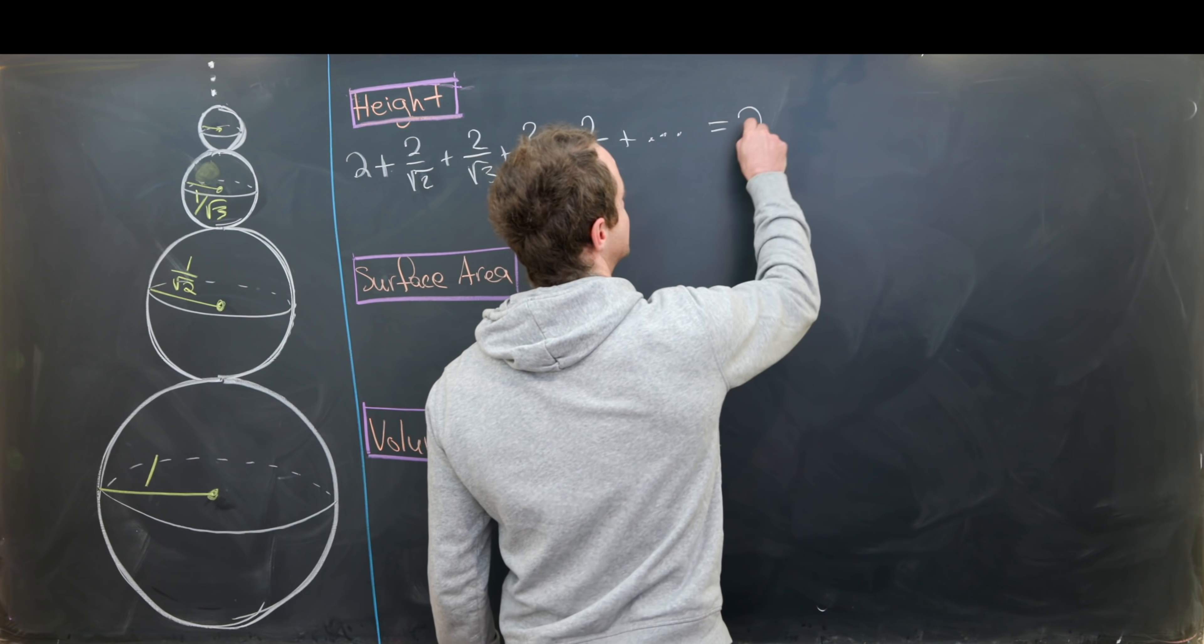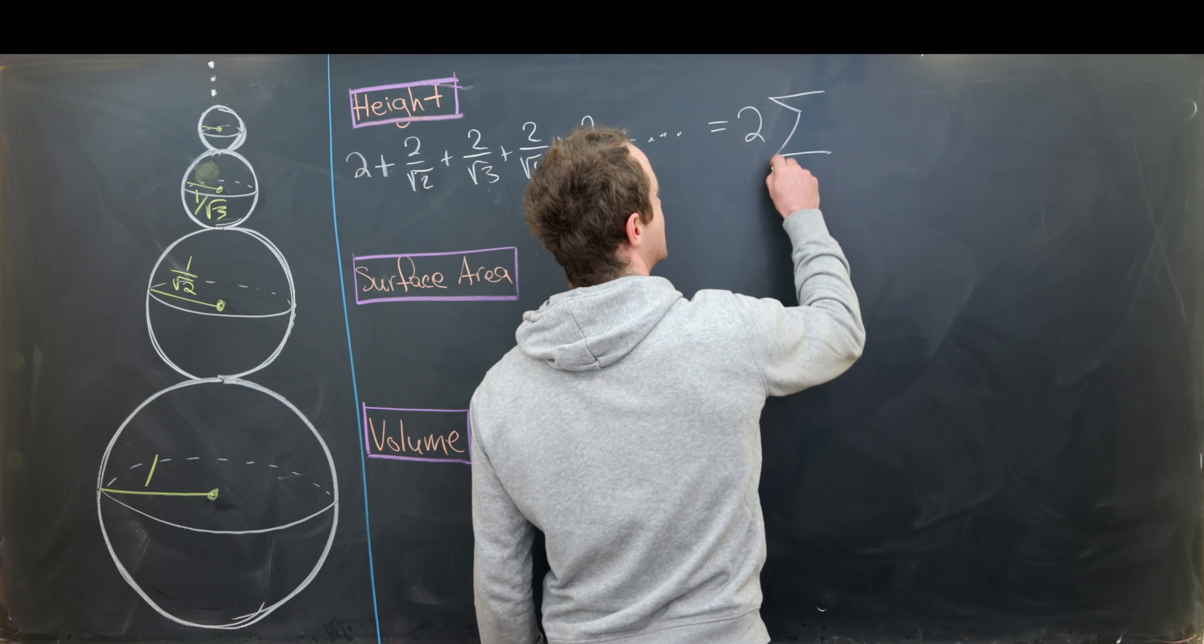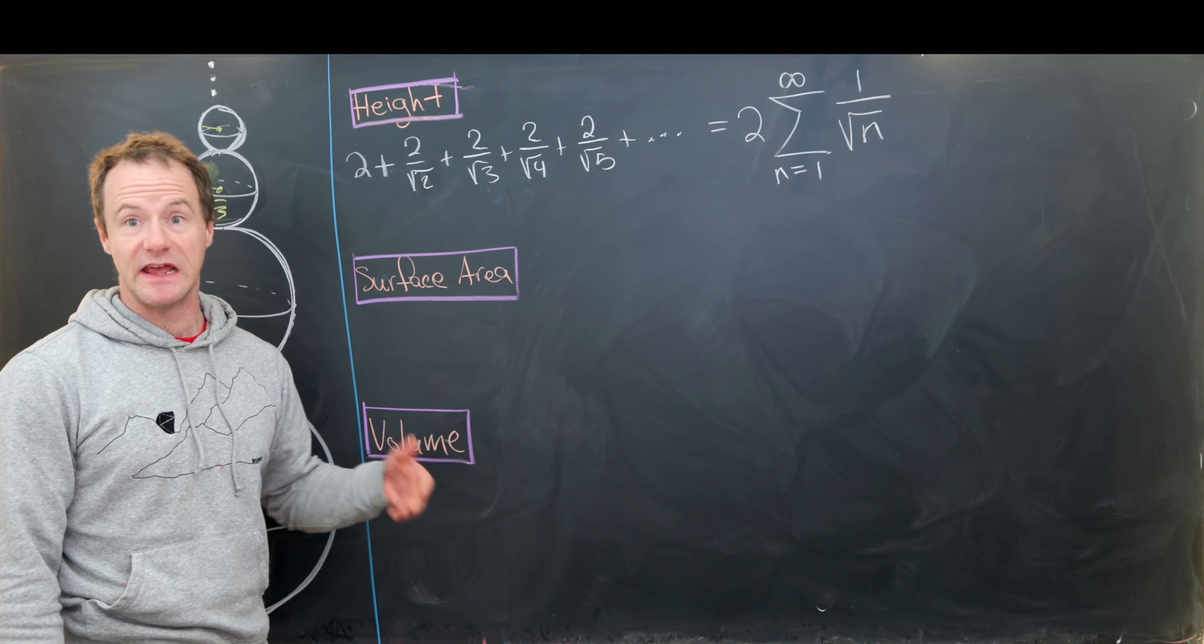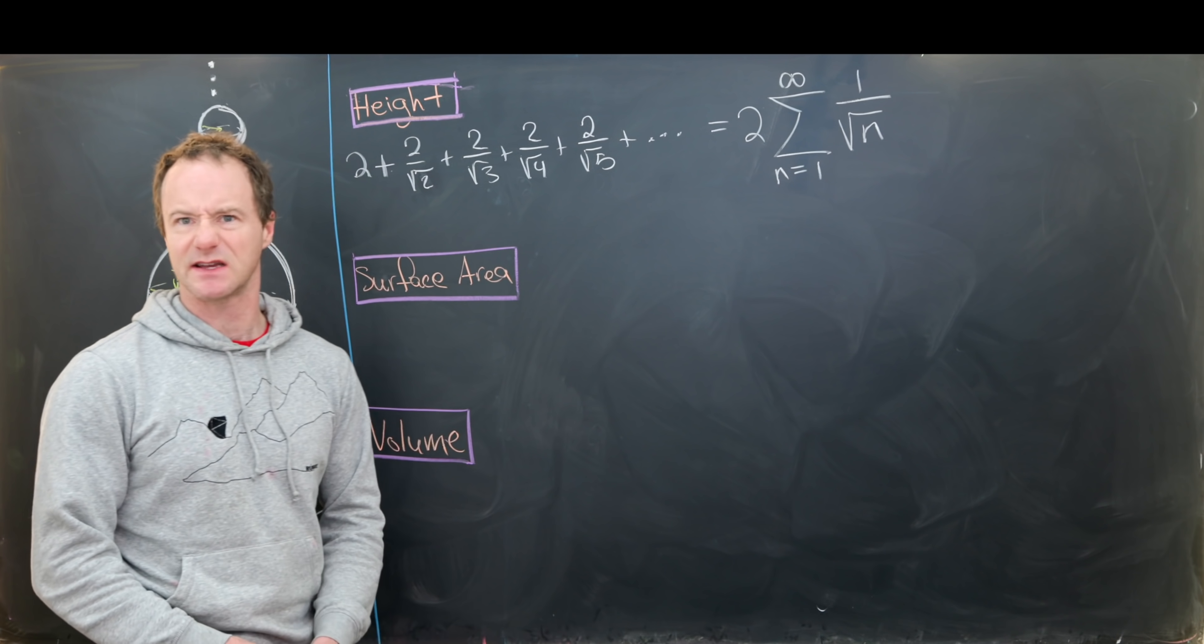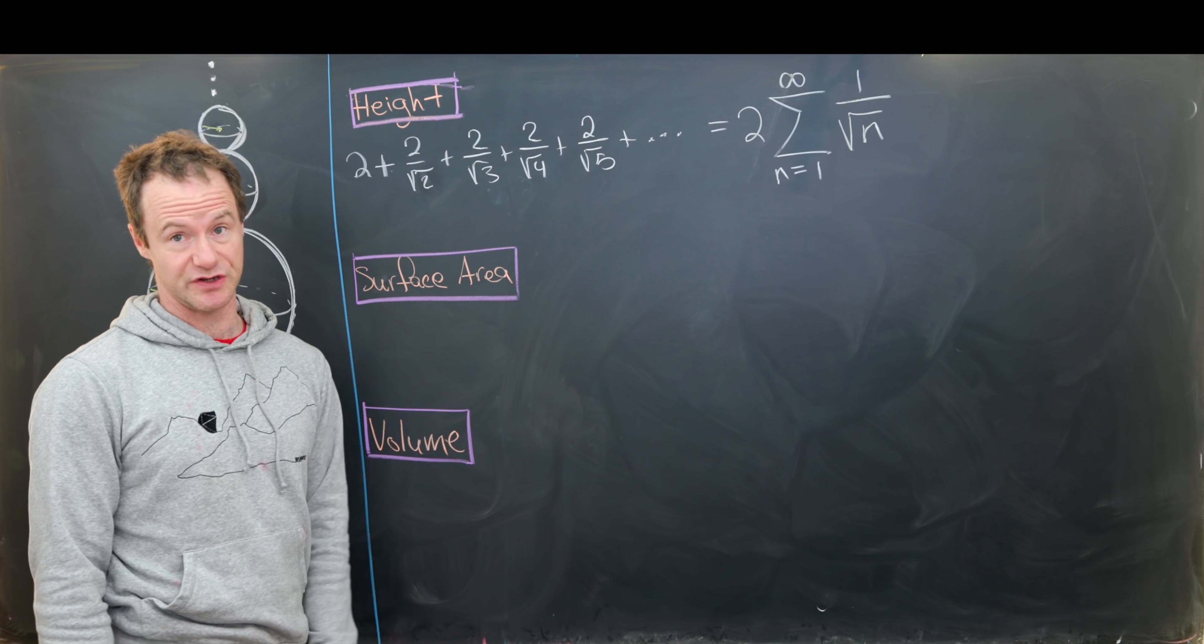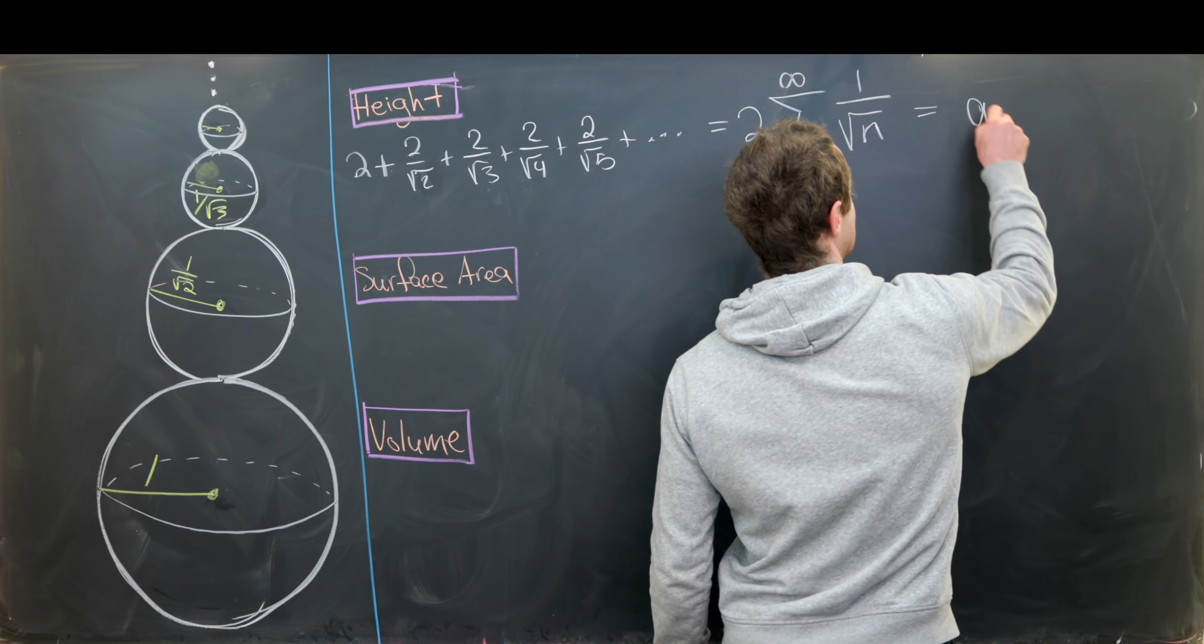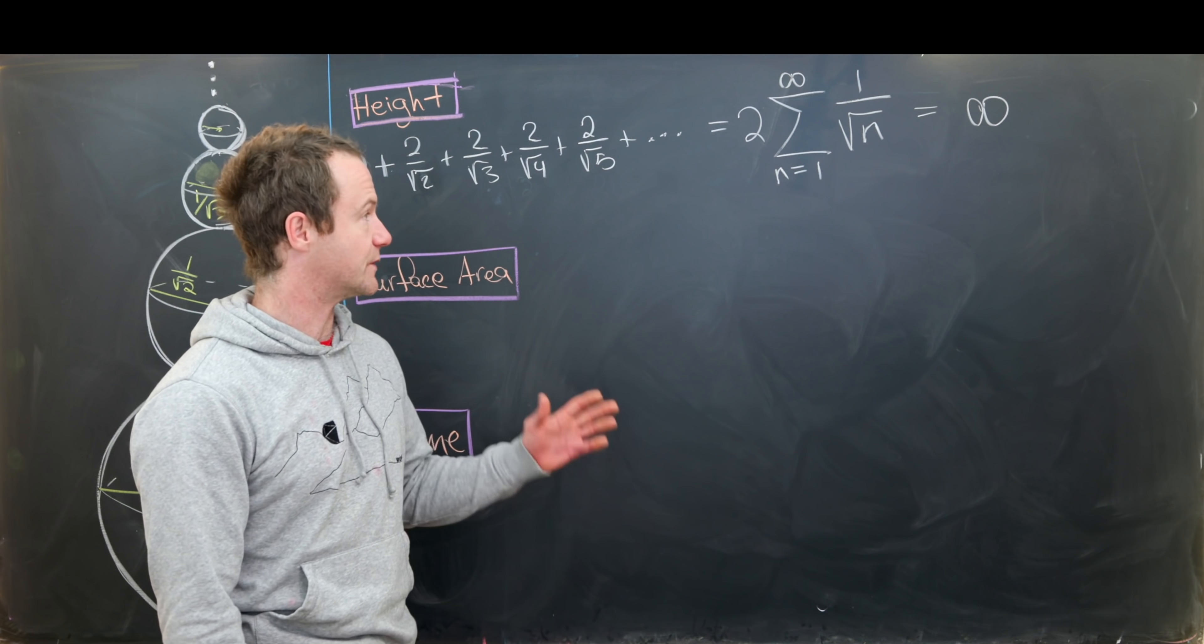So notice that'll be equal to two. I can most definitely factor a two out of this whole thing. And then I have the sum as n goes from one up to infinity of one over the square root of n. So now we need to, if possible, find a closed form for this sum. But if anyone's taken a calculus class, like a calculus two class, or maybe know anything about the harmonic series, this is larger than the harmonic series, and thus it diverges. And it also diverges infinitely. So this sum is in fact infinity. So that means how tall is this stack of spheres? It's infinitely tall, so it never ends.